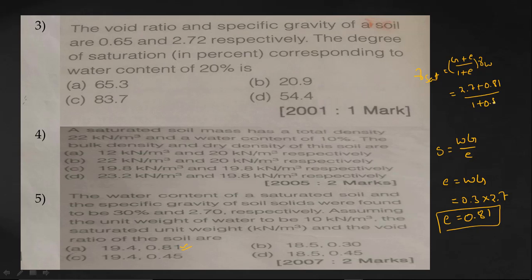Now let's find the saturated unit weight. Gamma_sat equals (G plus e) divided by (1 plus e), multiplied by gamma_w. That equals (2.7 plus 0.81) divided by (1 plus 0.81), multiplied by 10, which gives approximately 19.4 kN/m³. So the answers are void ratio 0.81 and saturated unit weight approximately 19.4 kN/m³.